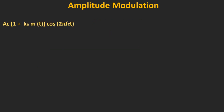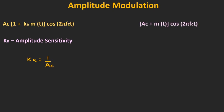This is the generalized expression of the AM signal, where Ka is the amplitude sensitivity. For simplicity, if we assume that Ka is equal to 1 over Ac, then the expression of the AM signal will get simplified to Ac plus m(t) times cos(·), where Ac plus m(t) is the envelope signal.